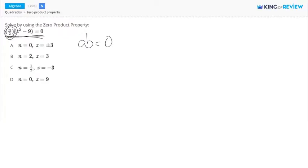So we're first going to set up n over 2 equal to zero. And also, we're going to think about when z squared minus 9 is equal to zero.